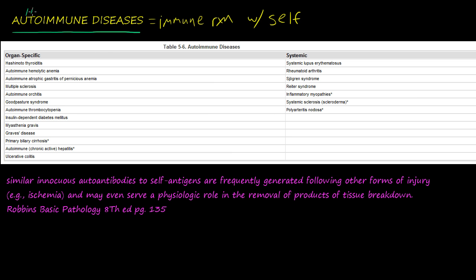Autoimmune — 'auto' means self — so autoimmune diseases are when your body mounts an immune reaction against itself. There are organ-specific types of autoimmune diseases and systemic types. There's also a caveat: we don't know with 100% certainty that these are fully autoimmune diseases.